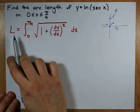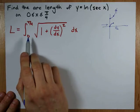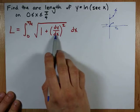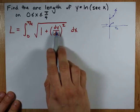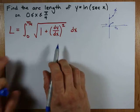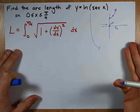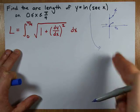In order to calculate the arc length, you go from your minimum x value, 0, to your maximum x value, pi over 4. And you're going to need the derivative of y with respect to x. Can you take the derivative of the ln of sec x? If you know chain rule, then you can.